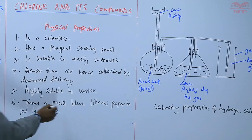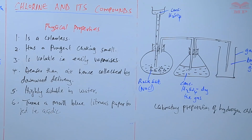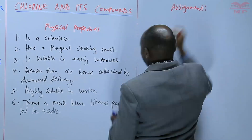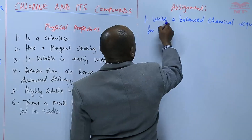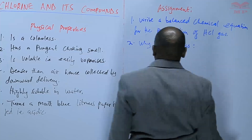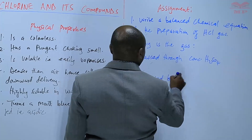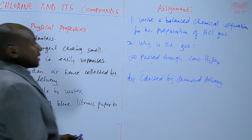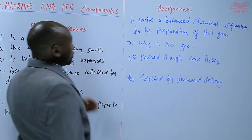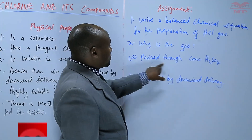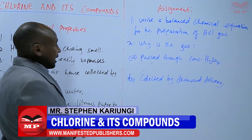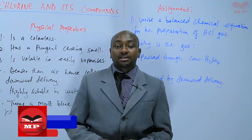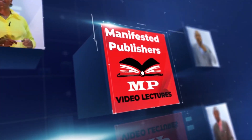We will have an assignment on this. Question one: write a balanced chemical equation for the preparation of hydrogen chloride gas. Question two: (a) why is the gas passed through concentrated sulfuric acid, and (b) why is it collected by downward delivery? We'll stop there until next time. Goodbye.